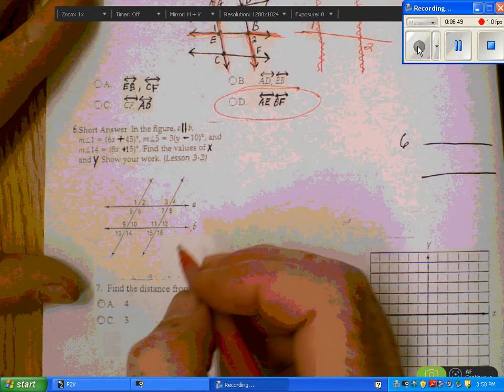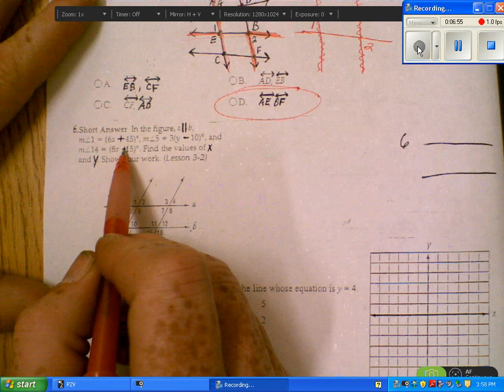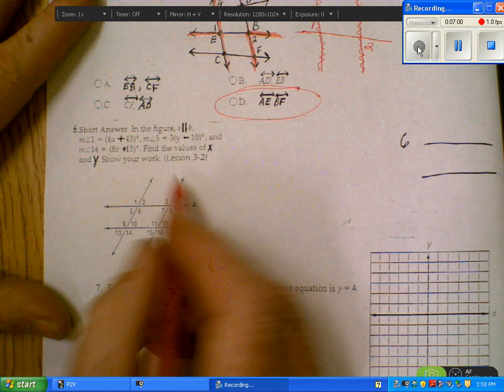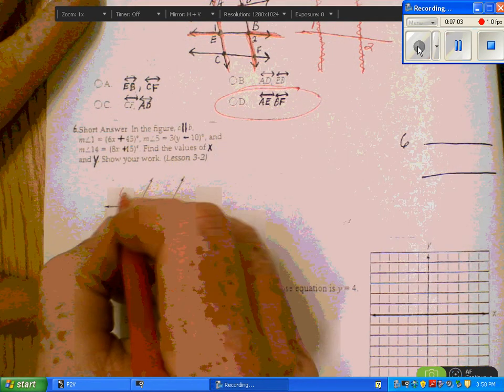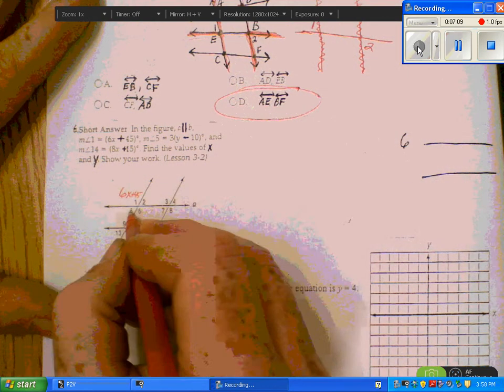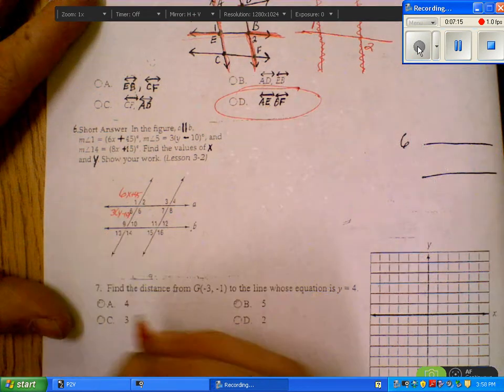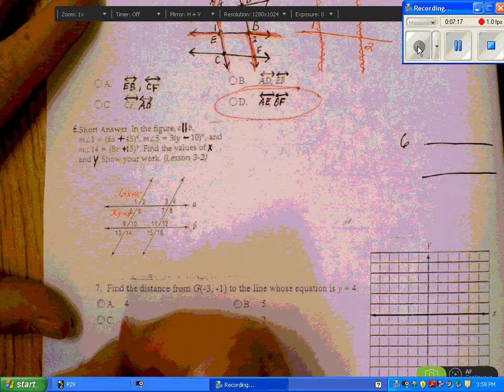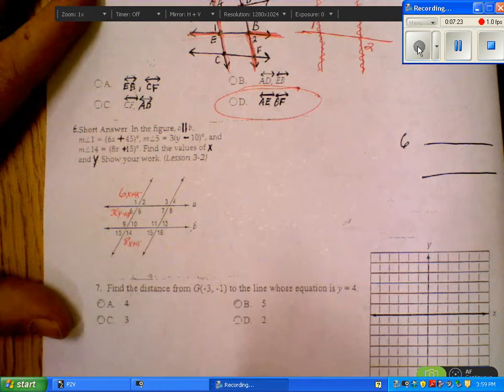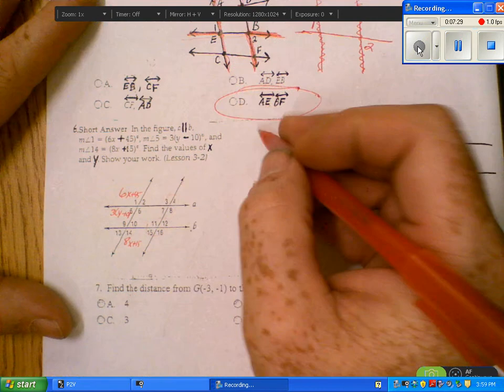Number 6, they tell us angle 1 is 6X plus 45, angle 5 is 3 times Y minus 10, angle 14 is 8X plus 15. They want us to find X and Y and show all of our work. The first thing I'm going to do, I'm going to get rid of that. I'm going to start to redraw this.